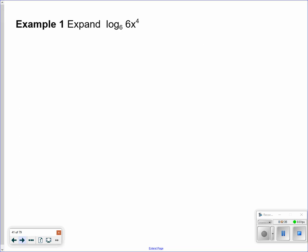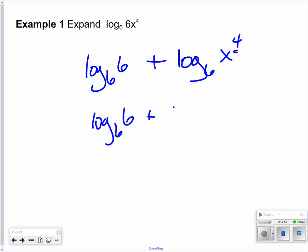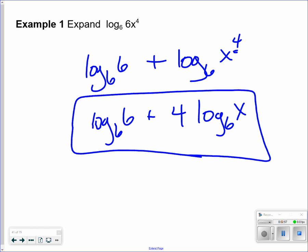So I want to break this down to as far as I can make this. So I notice I have multiplication. So I have log base 6 of 6 plus log base 6 of x plus 4. Now, one more item that I can do is because that is raised to an exponent, I can make that to 4 log base 6 of x. And this is all they're asking you to do, is they're asking you to expand it as far as it will go using the properties of logarithms.